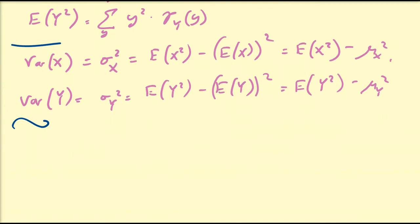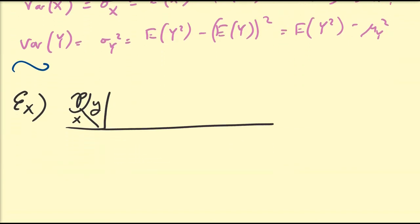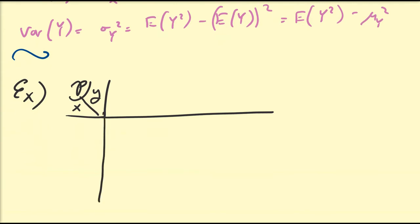For the rest of this video, we're going to be working on an example involving a joint probability mass function, calculating the marginal PMFs, and calculating the values we've just defined. The example we're going to work with has x values 1, 2, 3, and 4, and y values also 1, 2, 3, and 4.